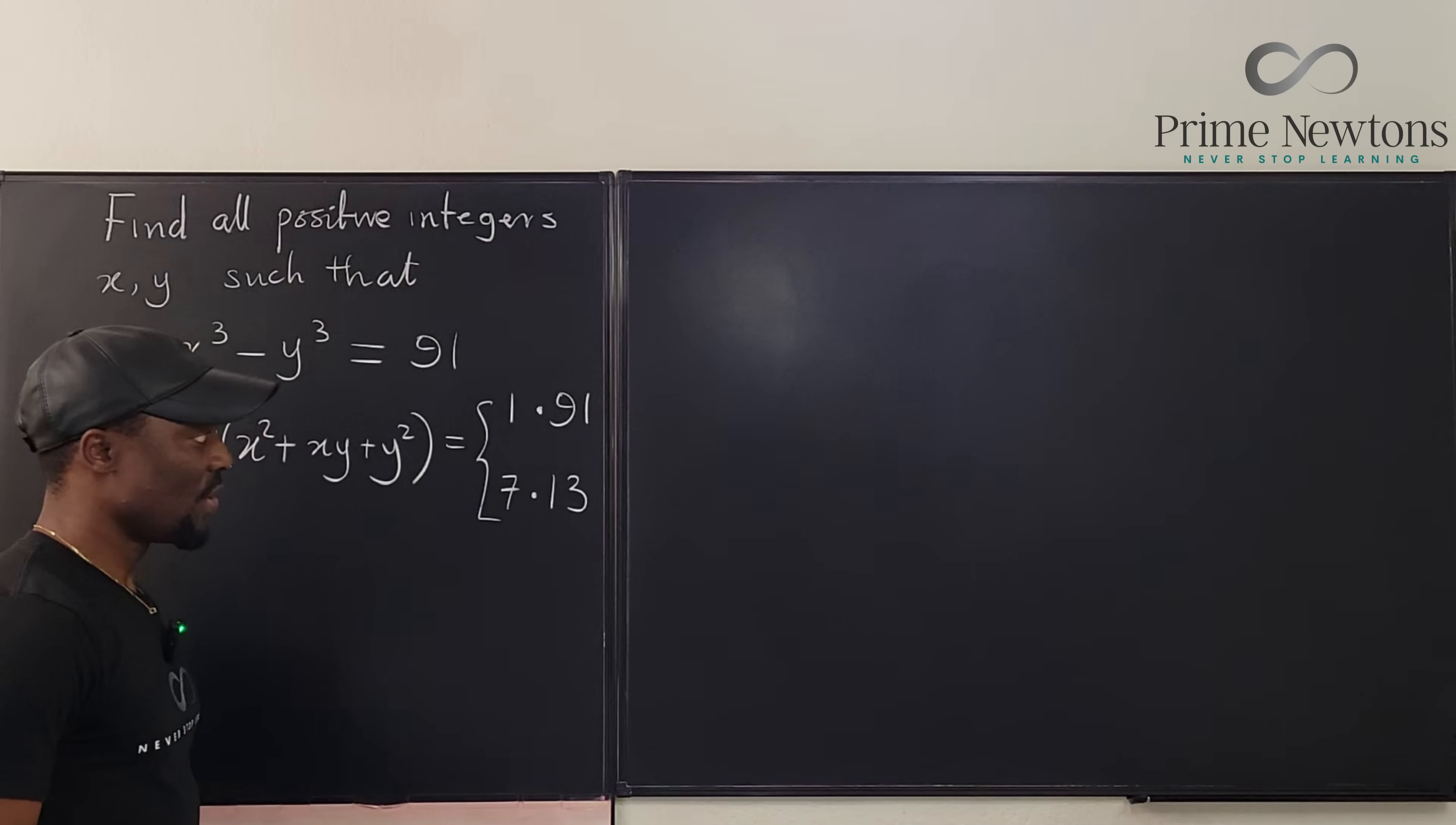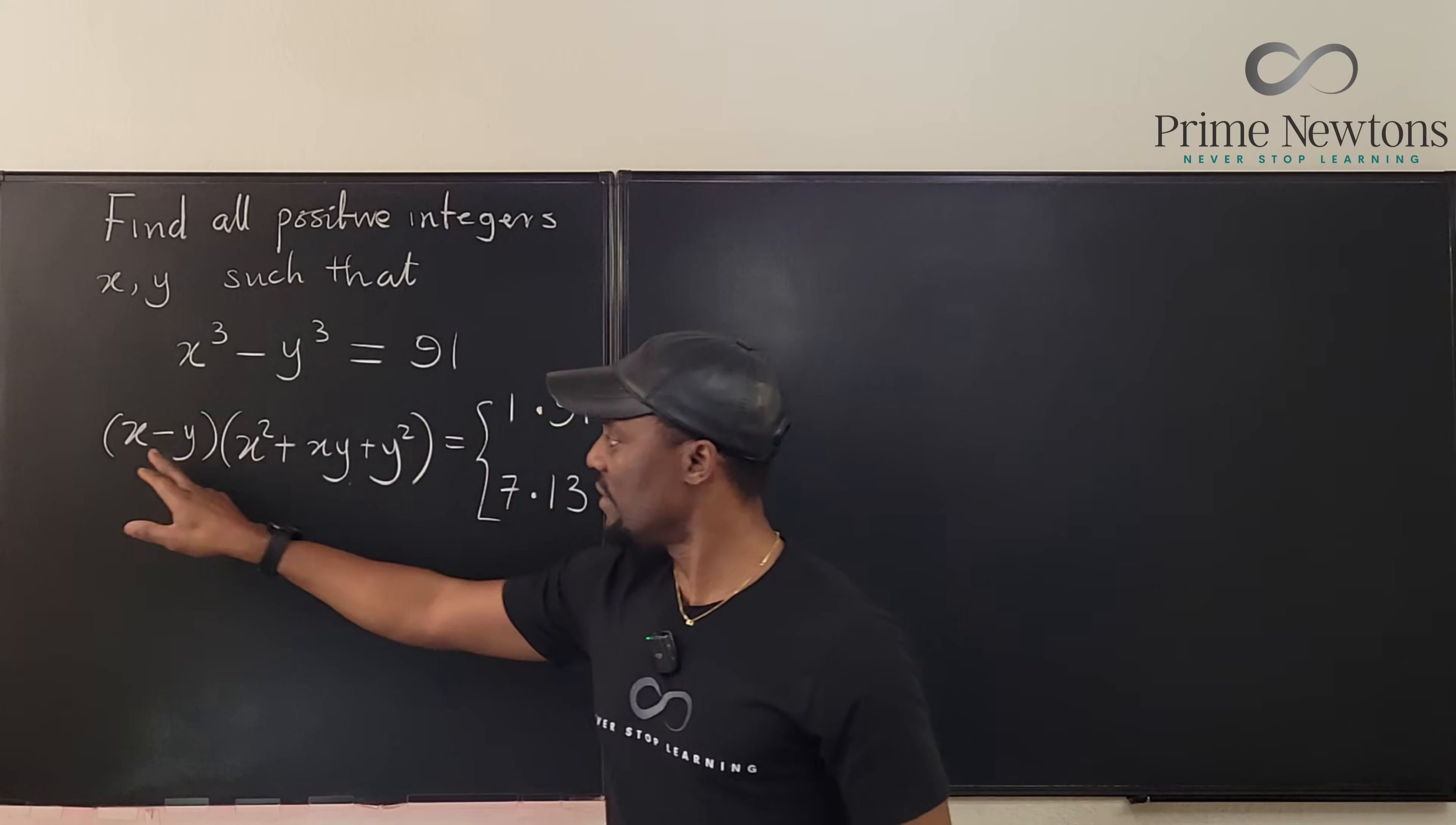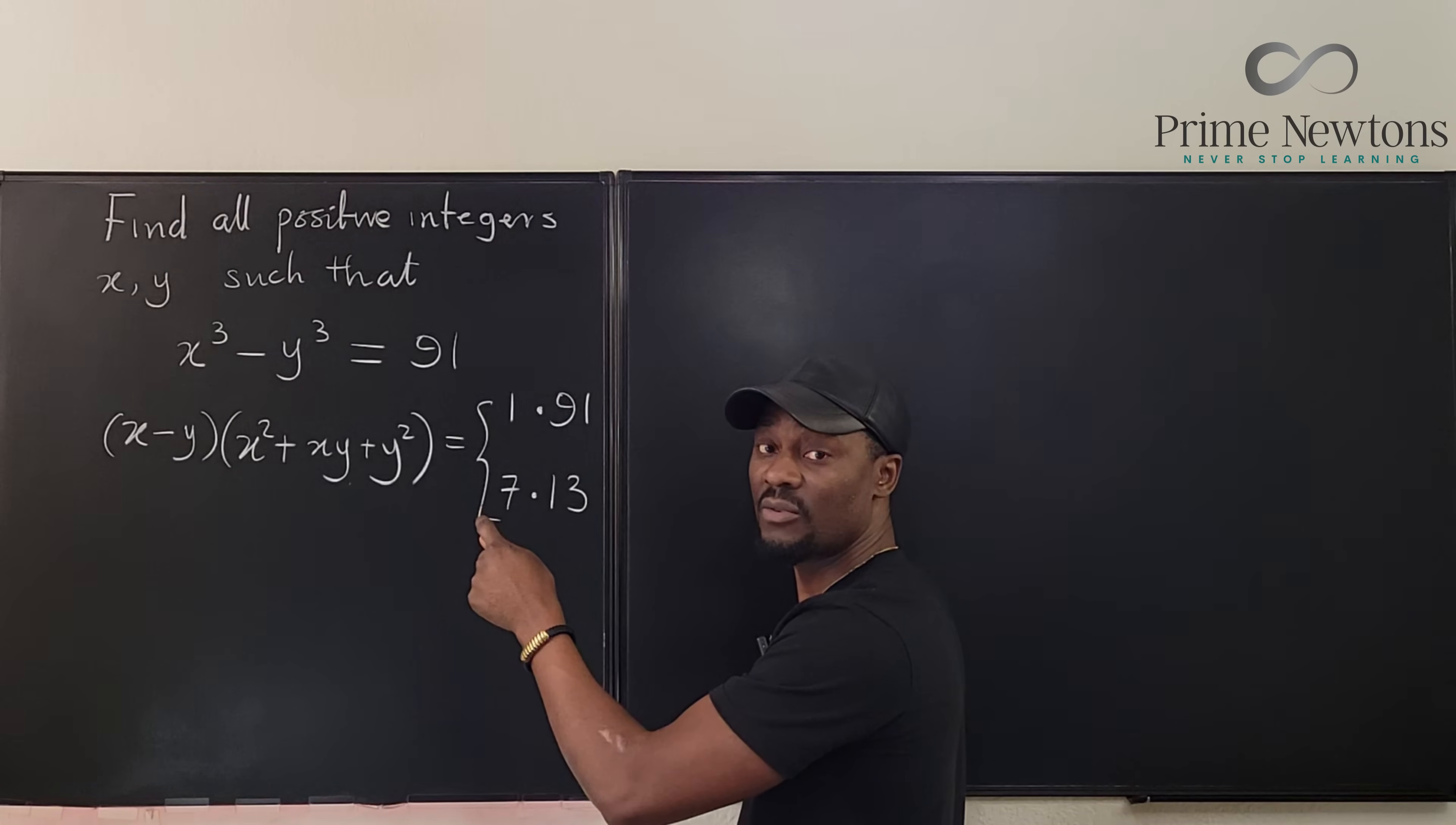So the next question you want to ask yourself is, so it is either we have x minus y equals 1 and this equals 91, or you switch it. But because of the nature of this type of problem, you can really tell which one is smaller and which one is bigger just by looking at these two. Clearly, this is a bigger number than this because everything is positive.